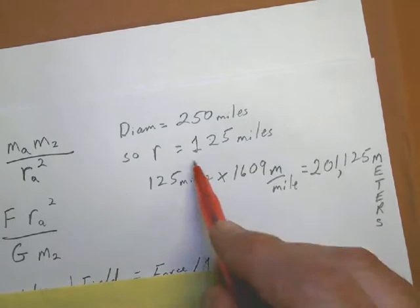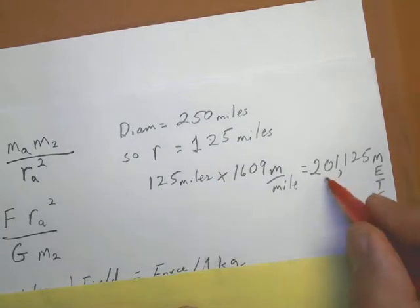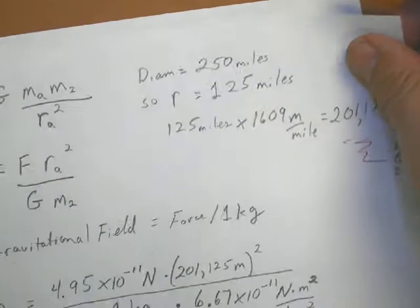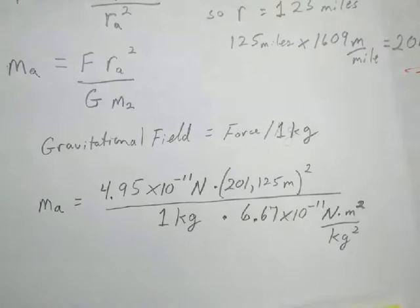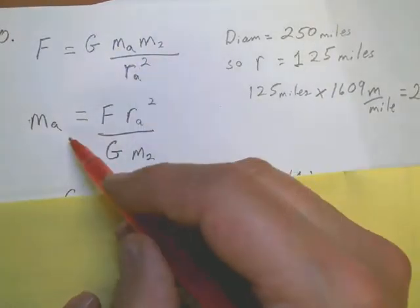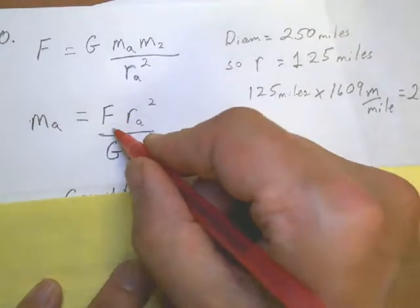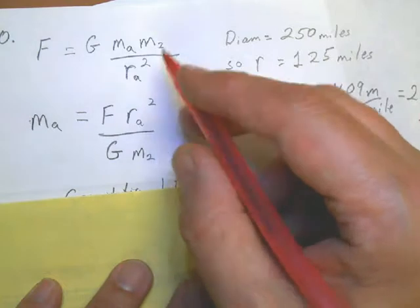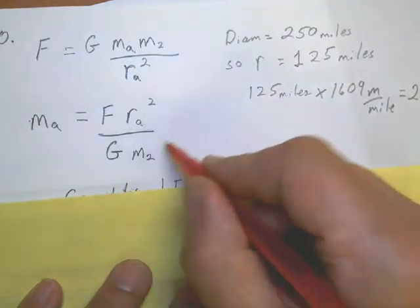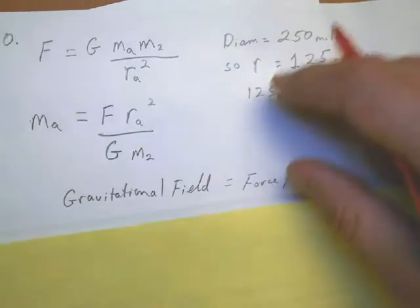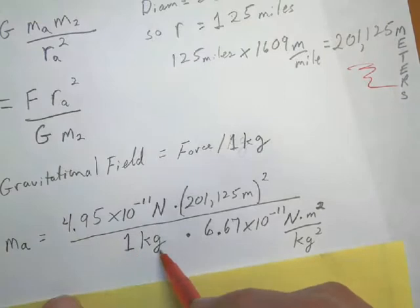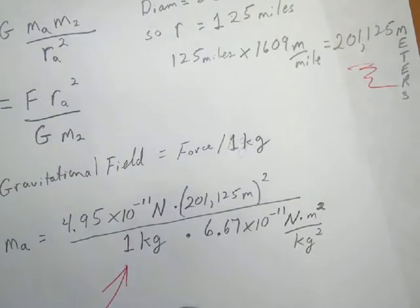Gravitational field is the force per one kilogram of mass that it's operating on. Going back to solving the equation, the mass of the asteroid would be equal to the force that's exerted between the asteroid and an object on it times the radius of the asteroid squared, divided by the gravitational constant times the mass of the other object. So I just plug those numbers in: there's the gravitational field, newtons per kilogram, times the distance between them squared, divided by the value of the gravitational constant. As it shows you then on the other sheet on the webpage, you end up with 3 times 10 to the 11 kilograms as the mass of the asteroid.